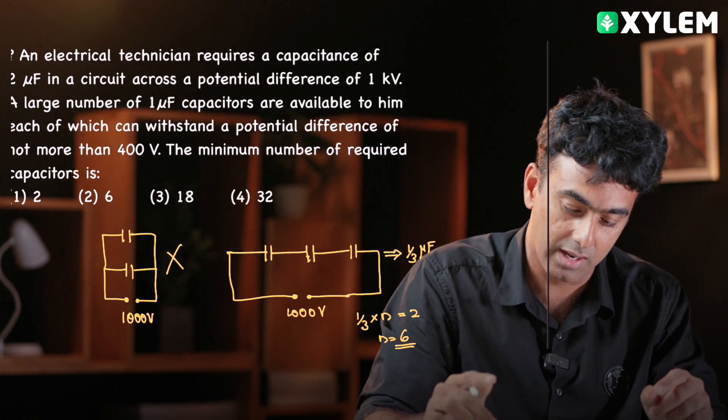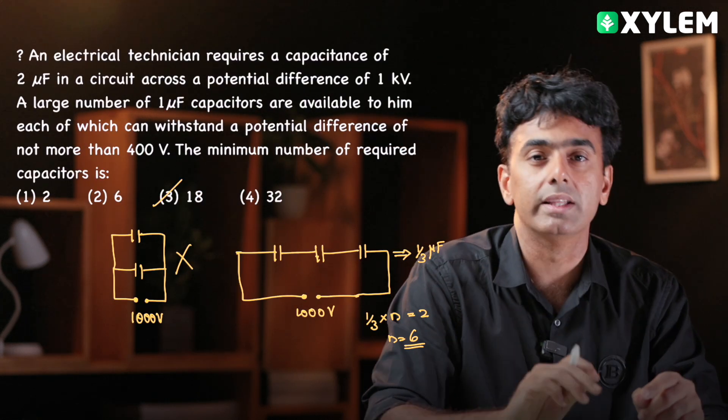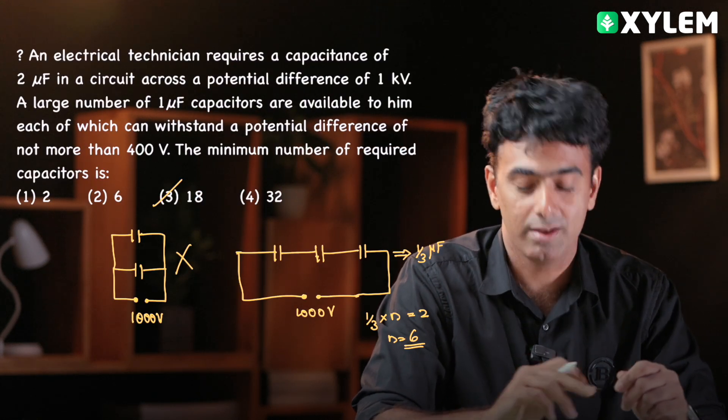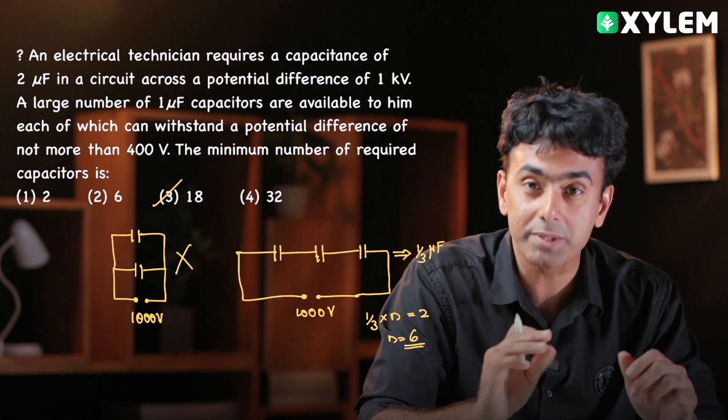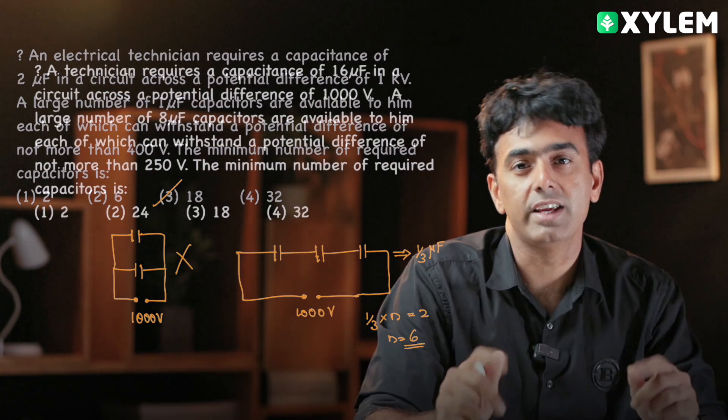That is 3 capacitors per row into 6 rows — 18 numbers we require. The final answer is option 3: 18 capacitors are required.